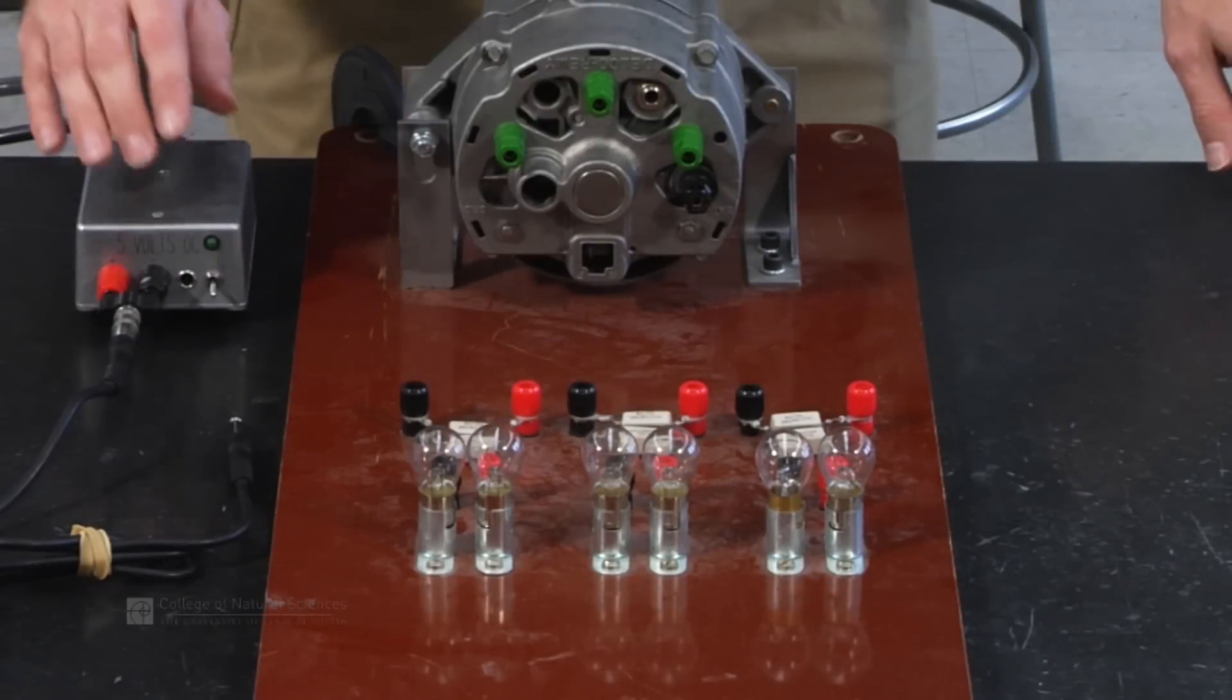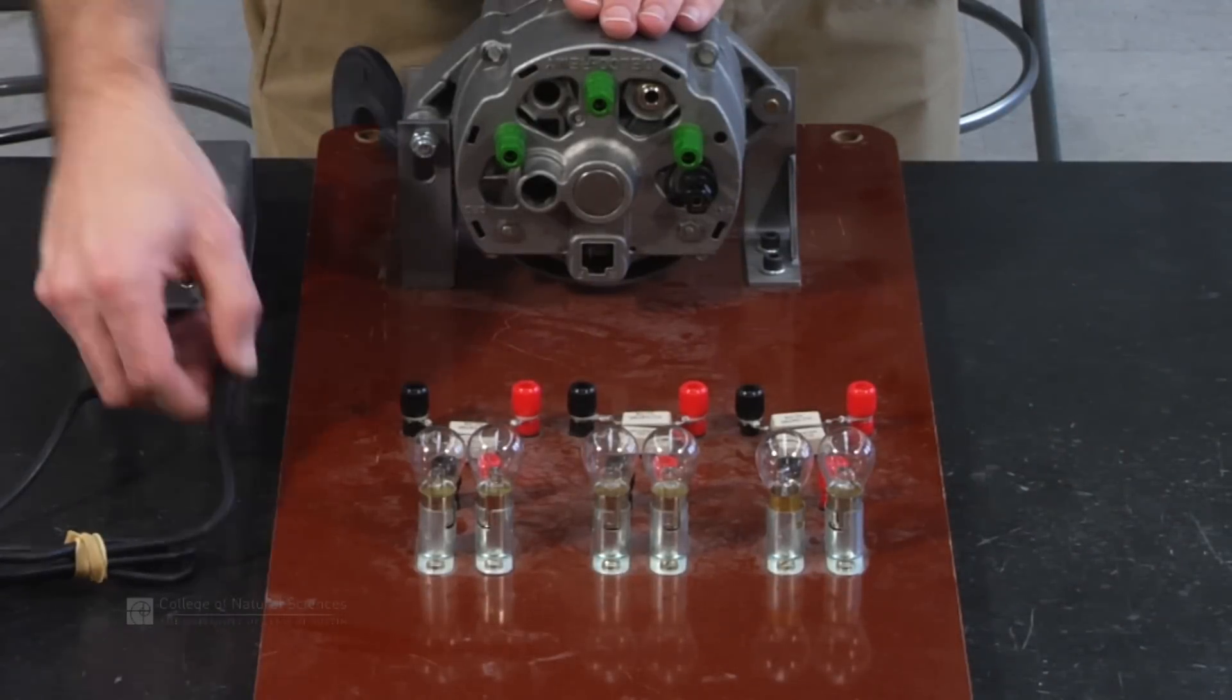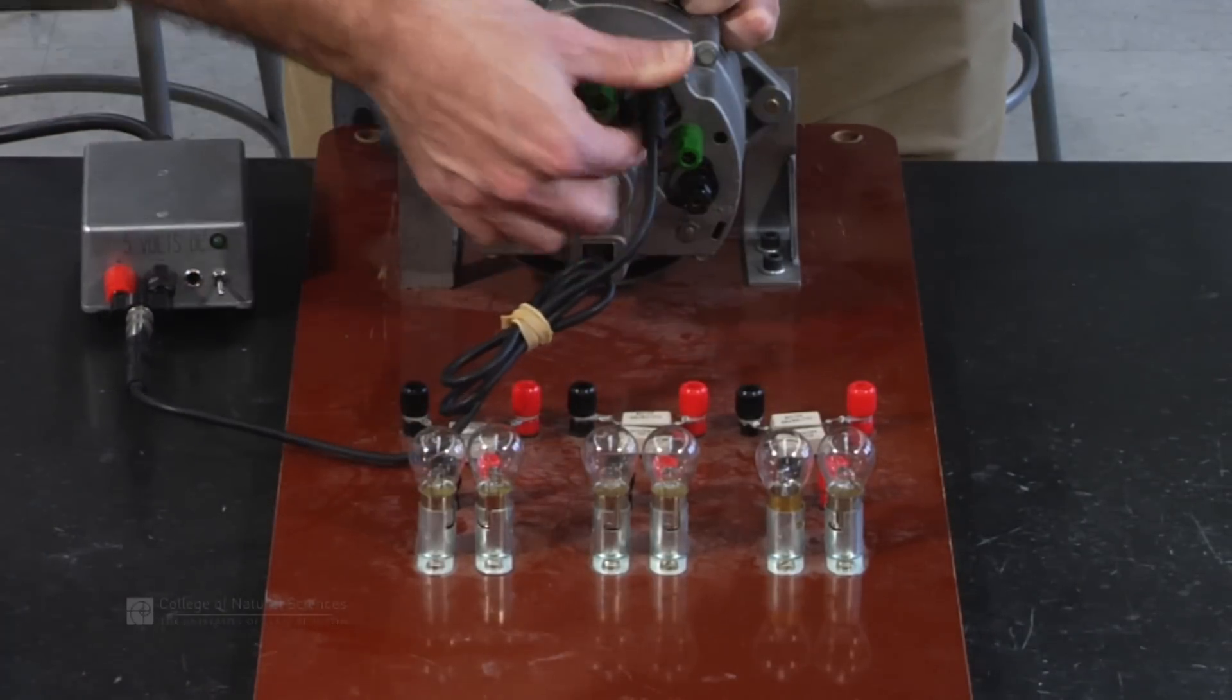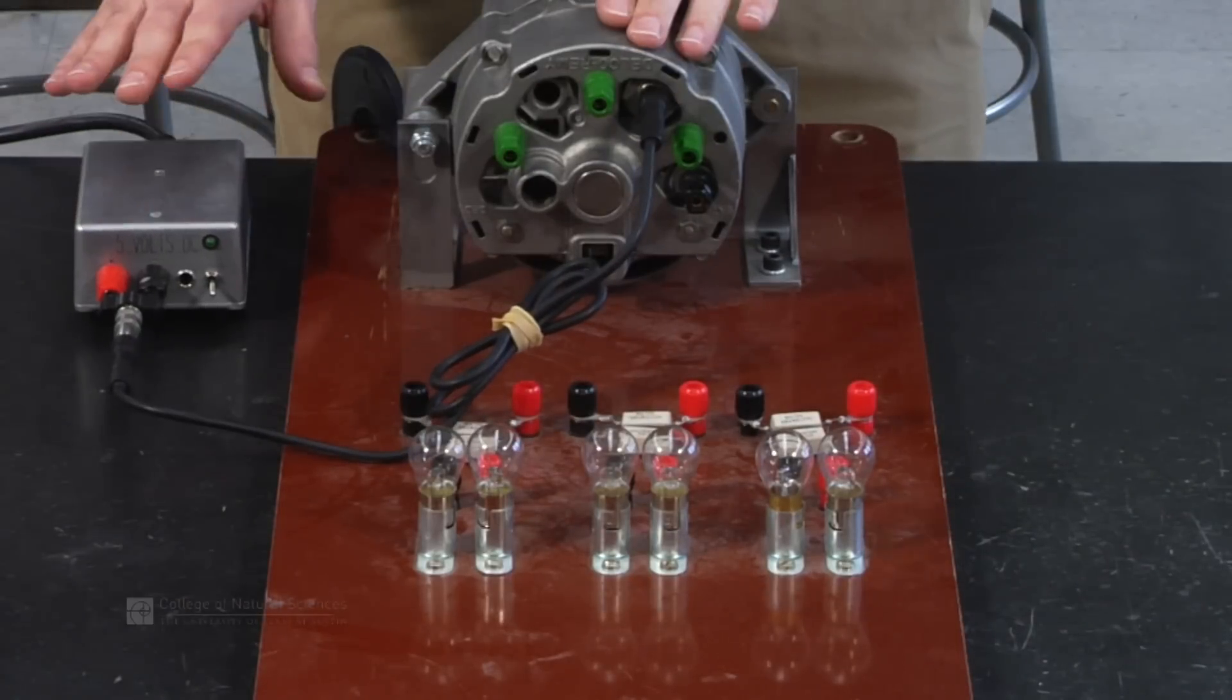So to set up our generator, we have to hook up the two components. We're going to hook up the electromagnet by connecting our little power supply to the port over there. That'll turn on our electromagnet.